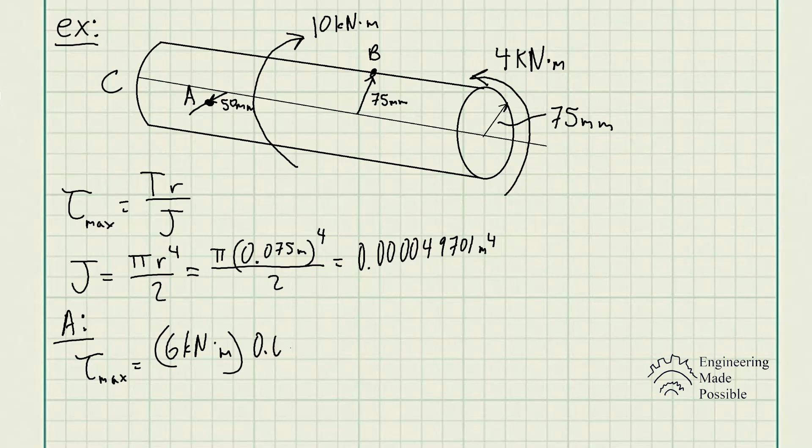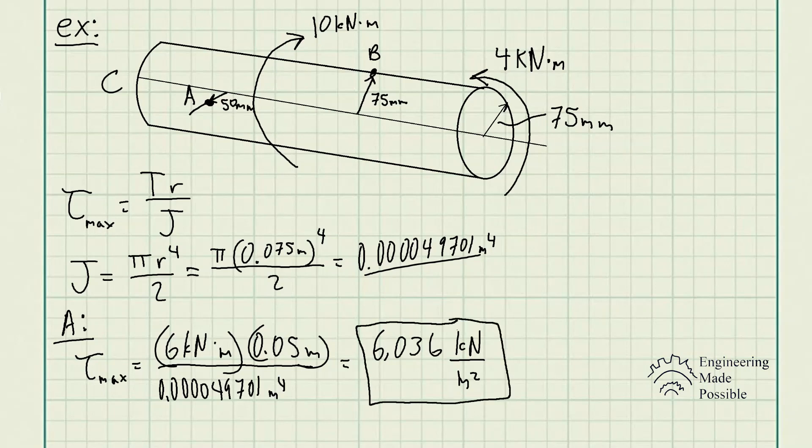And the radius here we see is 50 millimeters, so we convert it into meters, 0.05 meters here, divided by the polar moment of inertia, which is this number here. And it gives us 6,036 kilonewton per meter squared or kilopascals.